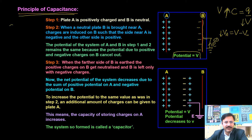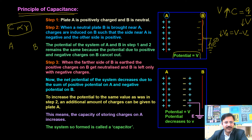If we want to increase the capacitance of a conductor without increasing its size, there is only one way: the capacitance of a conductor can be increased by bringing an identical, uncharged, grounded conductor very close to it. So the capacitance of a conductor can be increased without increasing its size just by bringing an identical grounded conductor very closer to it.